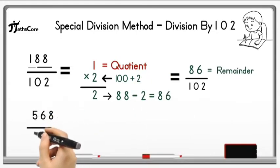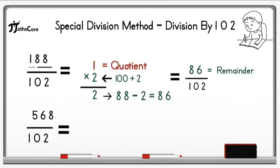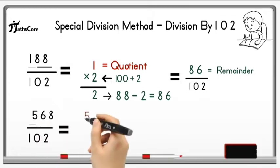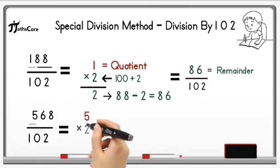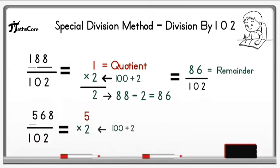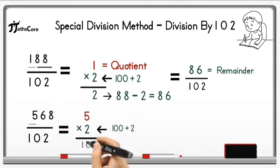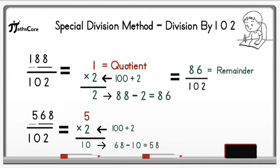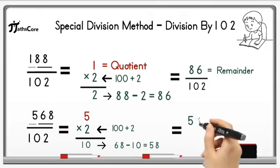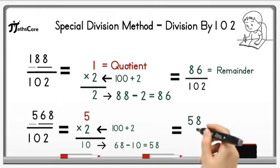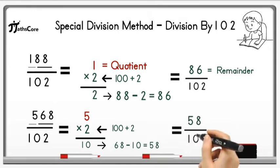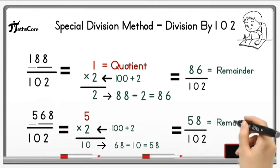Now write down 100 plus digit 5 here and multiply it by 2, because if we add 2 to 100 we get 102. So 5 multiplied by 2 is equal to 10. Now subtract this 10 from 68: 68 minus 10 is equal to 58. Divide 58 by 102 — it is not possible because 58 is less than 102. So 58 is the remainder and 5 is the quotient.